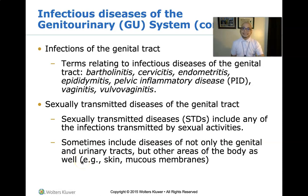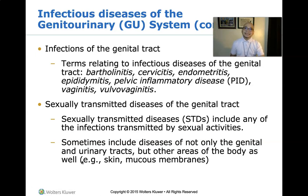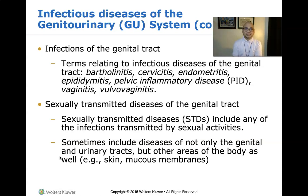Vaginitis describes disorders causing infection or inflammation of the vagina. Vulvovaginitis refers to inflammation of both the vagina and the vulva — the external female genitals — and can result from infection by bacteria, yeast, or viruses. Sexually transmitted infections include any infections transmitted by sexual activities, and can affect not only the genital and urinary tract but other areas such as the skin, mucous membranes, mouth, or anus.